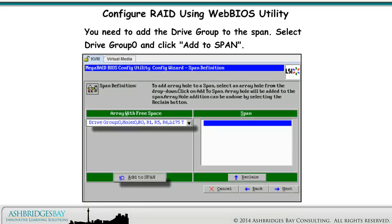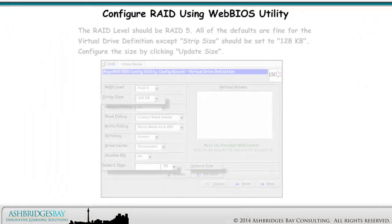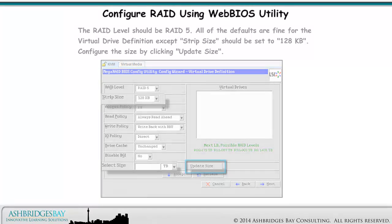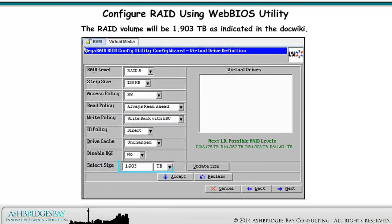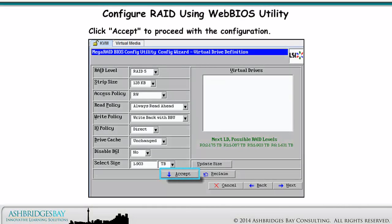You need to add the drive group to the span. Select Drive Group 0 and click Add to Span. Now that you have the drive group in the span, click Next. The RAID level should be RAID 5. All of the defaults are fine for the virtual drive definition except strip size should be set to 128 kilobytes. Configure the size by clicking Update Size. The RAID volume will be 1.903 terabytes as indicated in the Dock Wiki. Click Accept to proceed with the configuration.